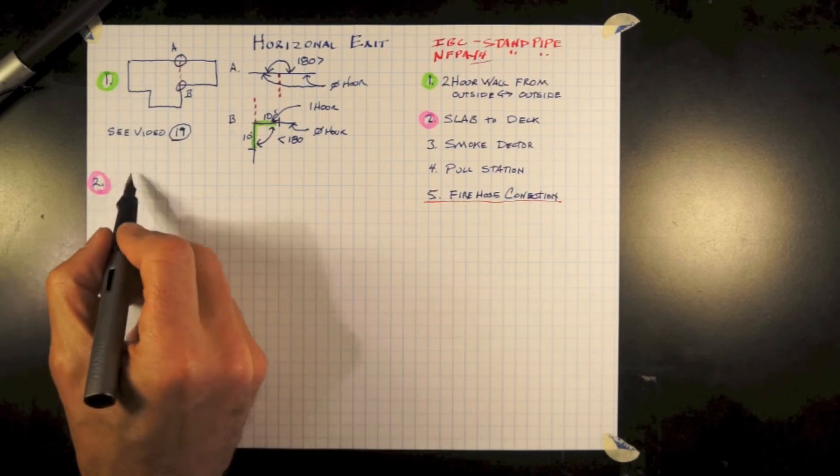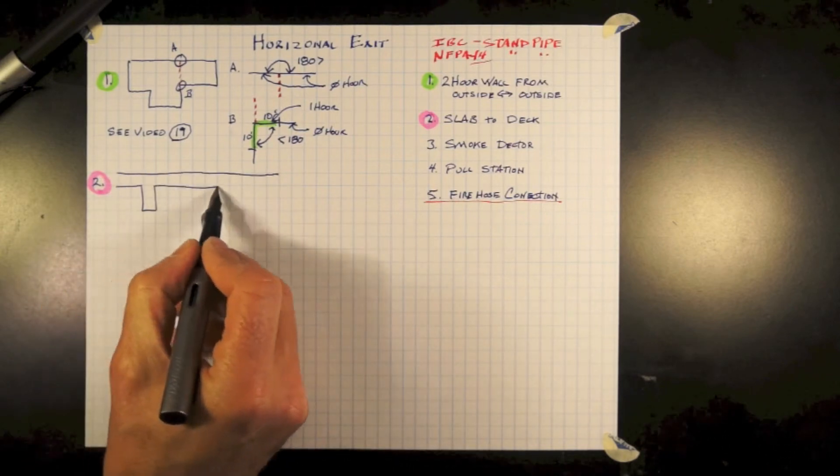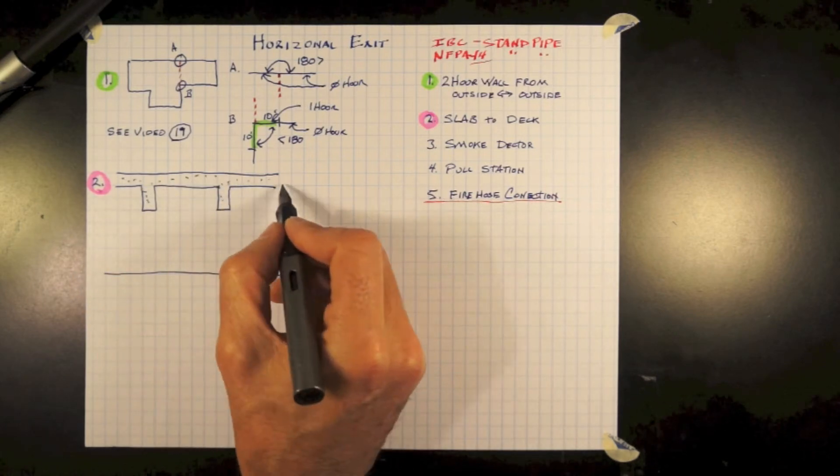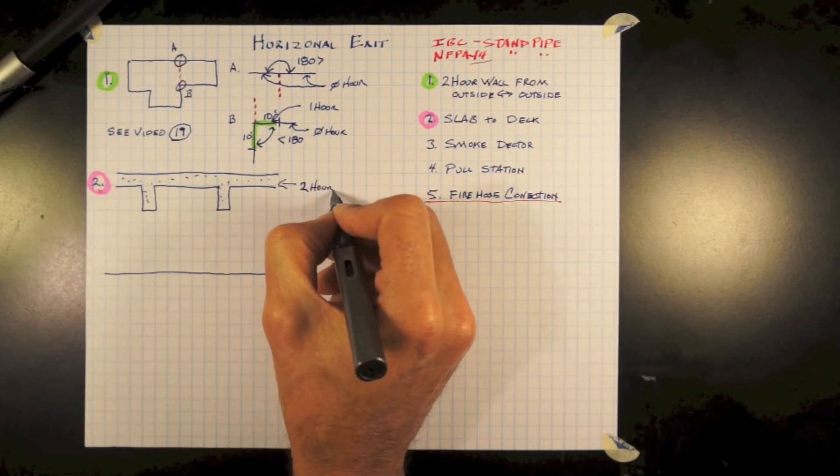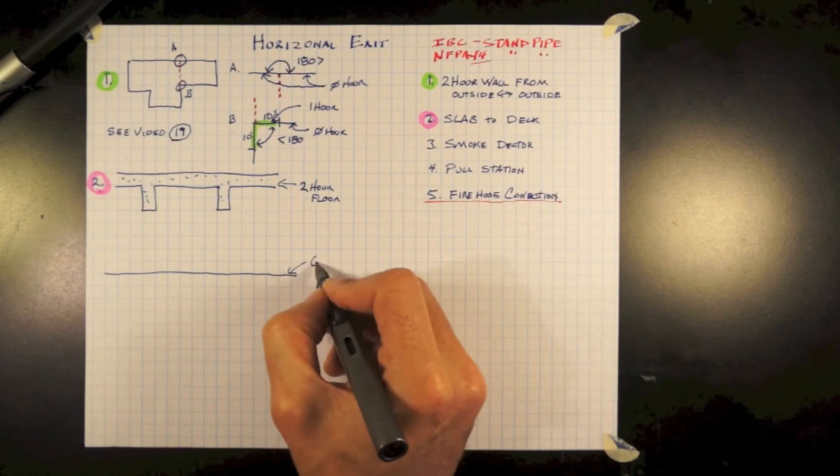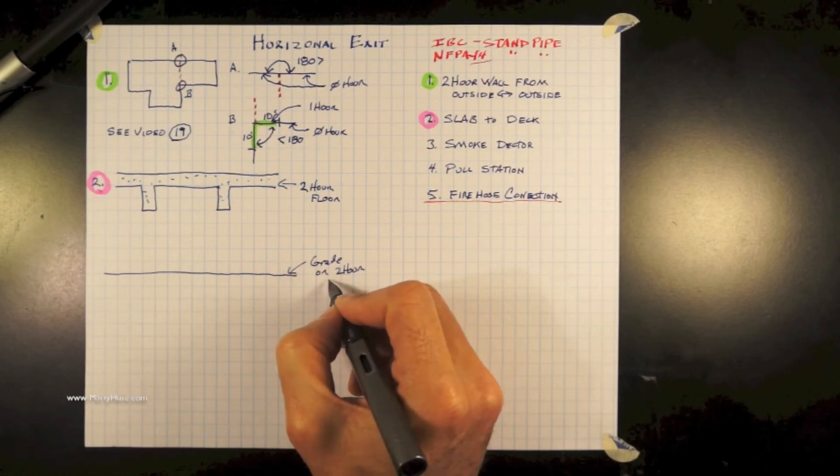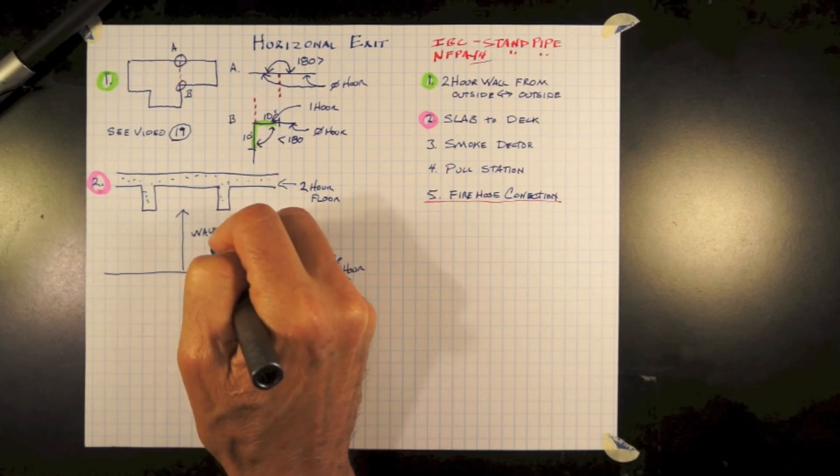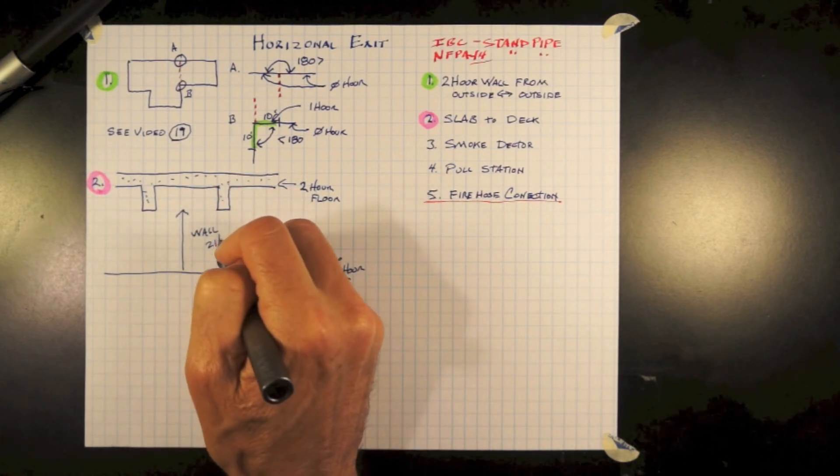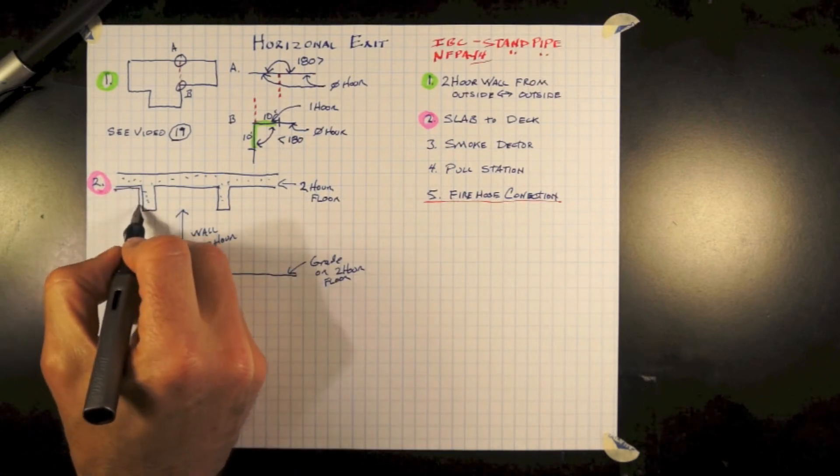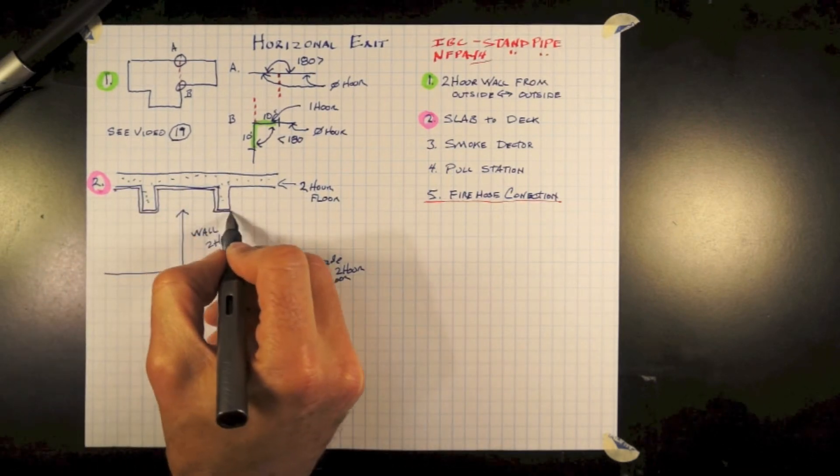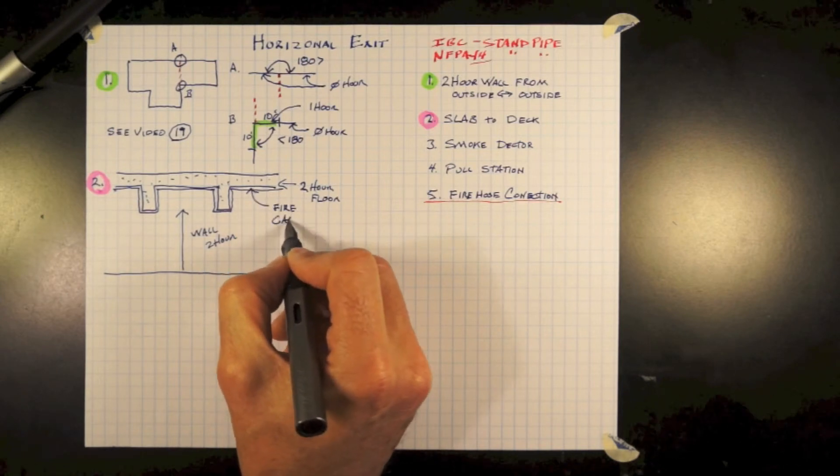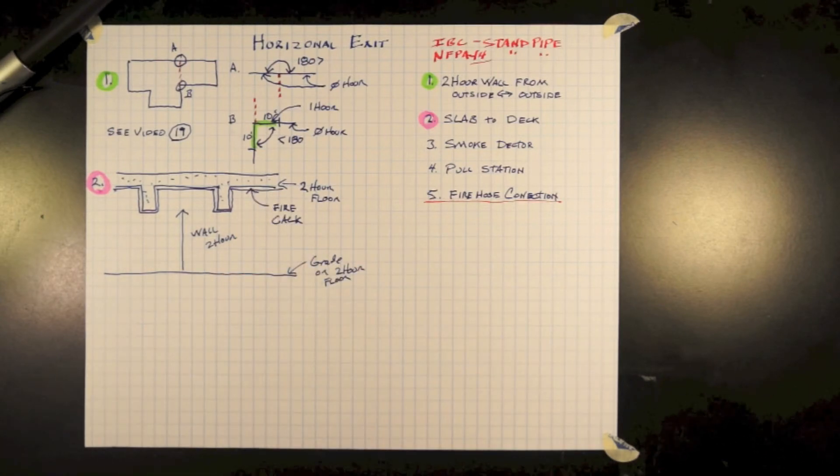So therefore, let's draw a concrete slab. And with our structure or slab below, it must be also two hour or on grade. The wall must go from the slab all the way to the structure above, wrapping around all the joists. And it must fit tightly. Fire caulk must be placed at the top of the drywall to the deck above.